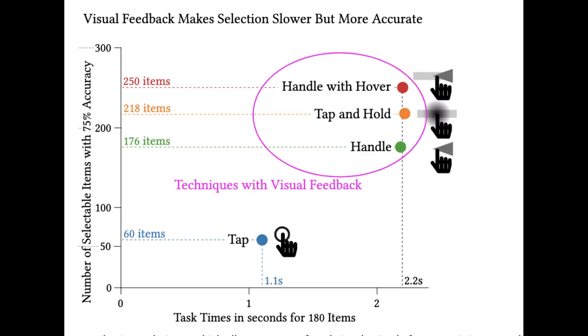In summary, providing any type of visual feedback using drag-based selection techniques improves selection accuracy three to four-fold and allows users to reliably interact with more data on a 1D visualization. This comes at the cost of a small increase in task times.